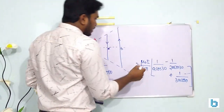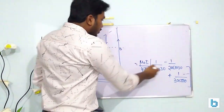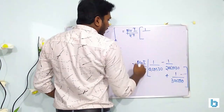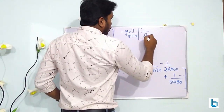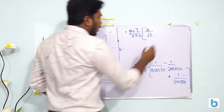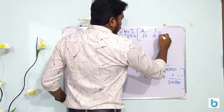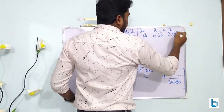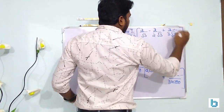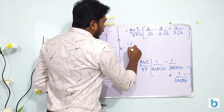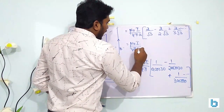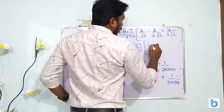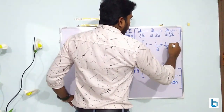Substituting cos30° = √3/2, the expression becomes μ₀i / (4πA) × (2/√3) × [1 − 1/2 + 1/3 − 1/4 + ...]. Here 1/A is factored outside, cos30° = √3/2 gives 2/√3 as the prefactor, and within the brackets we have the alternating harmonic series 1 − 1/2 + 1/3 − 1/4 continuing to infinity.